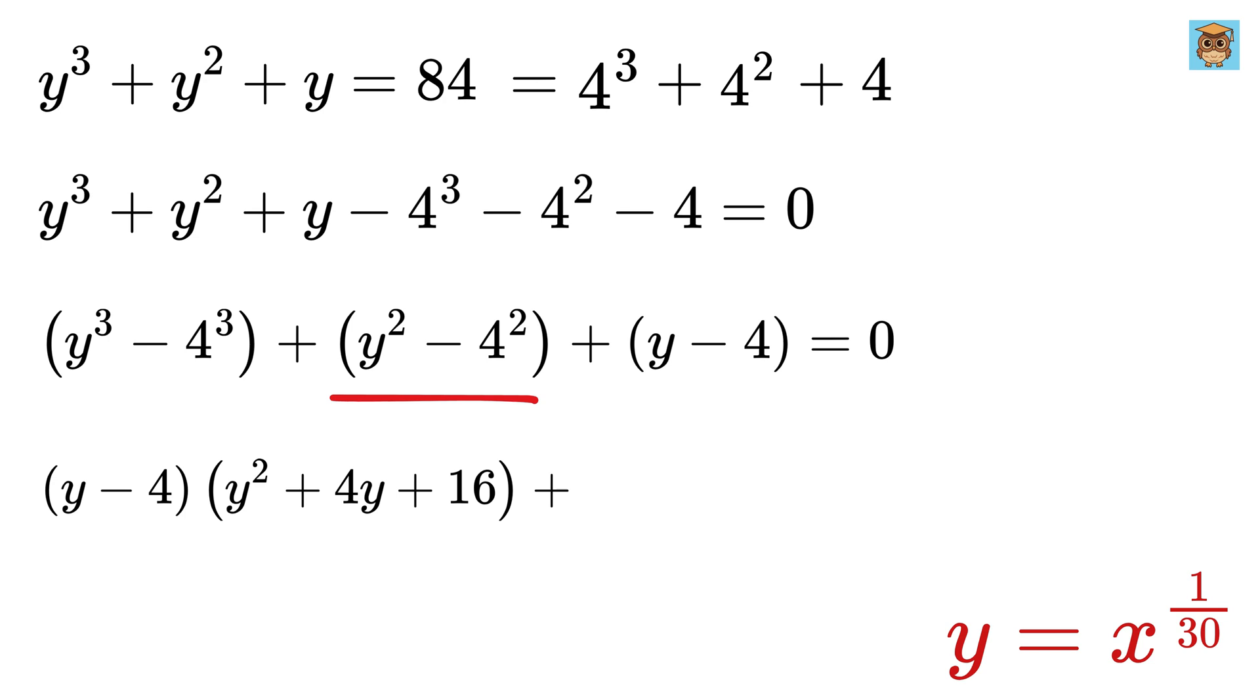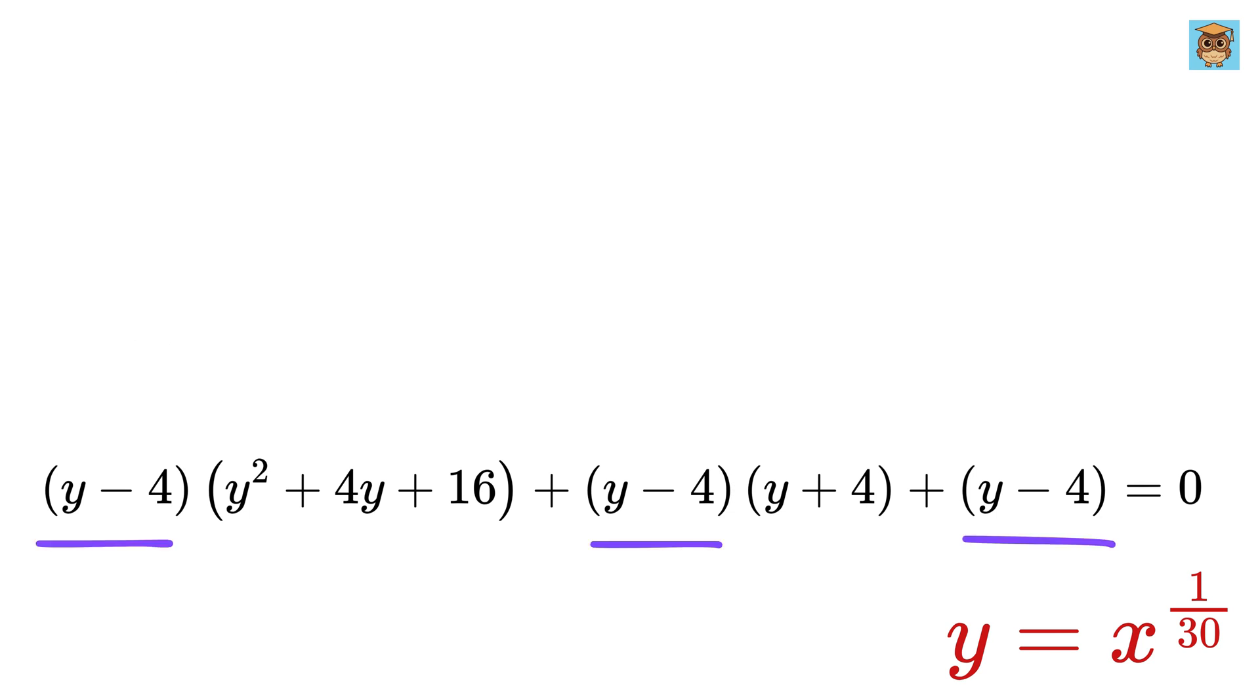The second group is a difference of squares, and we can use this famous formula to factor the difference of squares. Using a as y and b as 4, we can factor this as y minus 4 multiplied by y plus 4. The last term, y minus 4, is already in factored form. Now we factor out y minus 4 from all terms. This gives us y minus 4 multiplied by y squared plus 5y plus 21 equals 0.